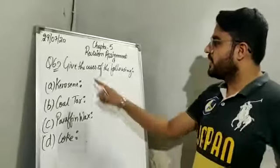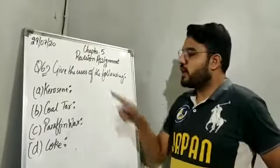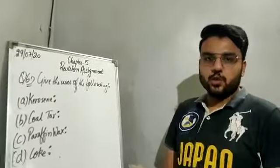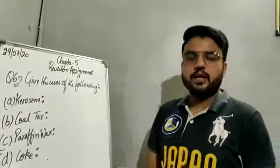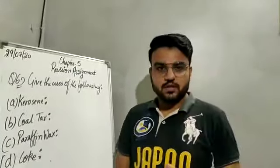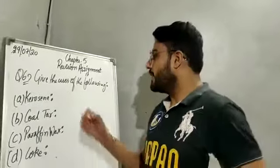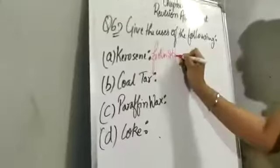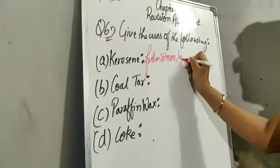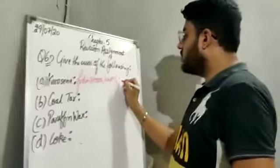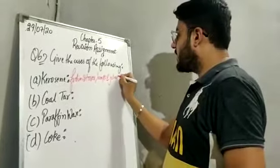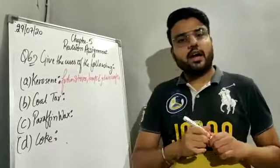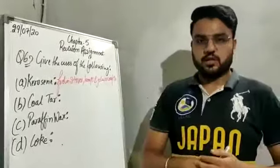Question number six: give the uses of the following. Part A is kerosene. Kerosene is used as a fuel in stoves, lamps, and also jet aircrafts. The fuel used in jet planes and jet aircrafts is kerosene.